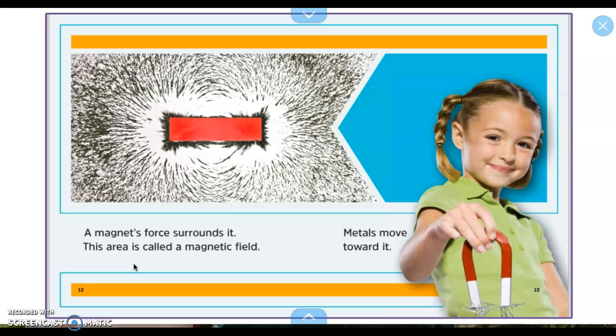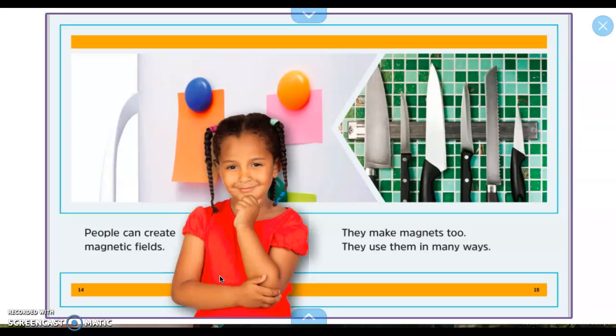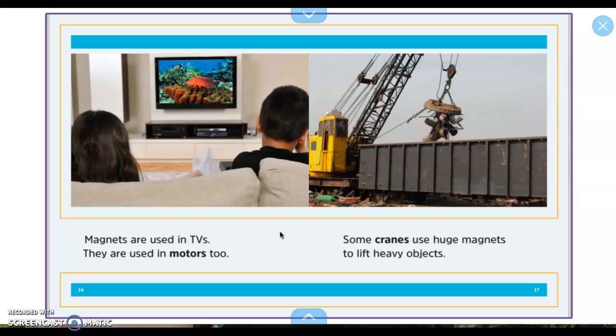A magnet's force surrounds it. This area is called the magnetic field. Metals move toward it. People can create magnetic fields. They make magnets, too. They can use them in many ways. So here are some magnets on a refrigerator. Here are some. This is a large strip of a magnet. And then these knives are magnetic, so they can stick to them. Magnets are used in TVs, too. They are used in motors, too.